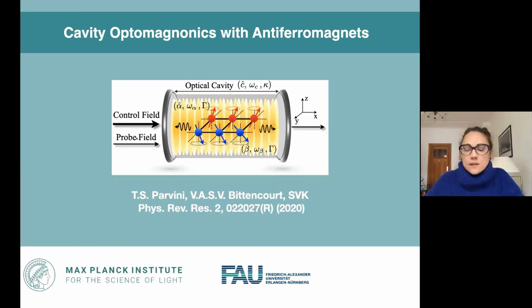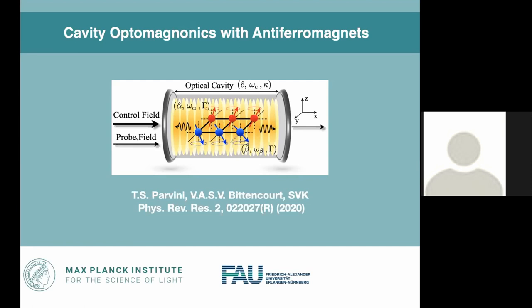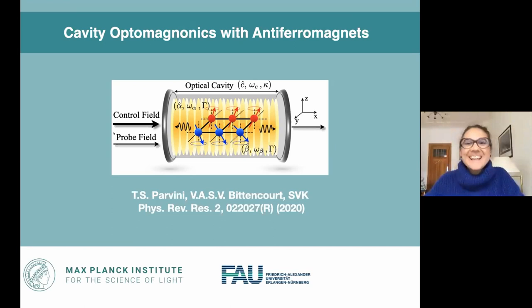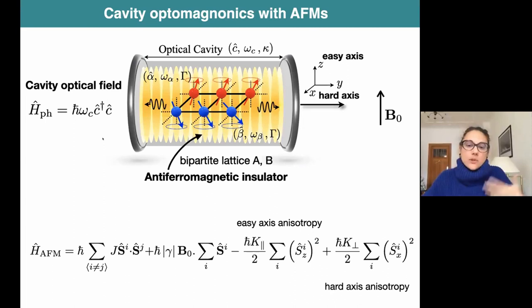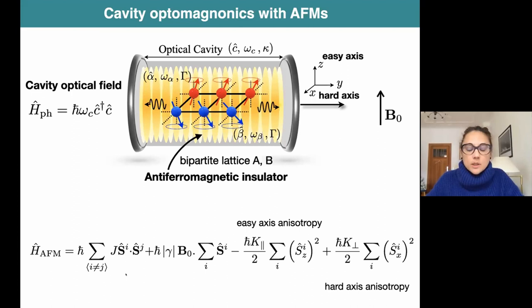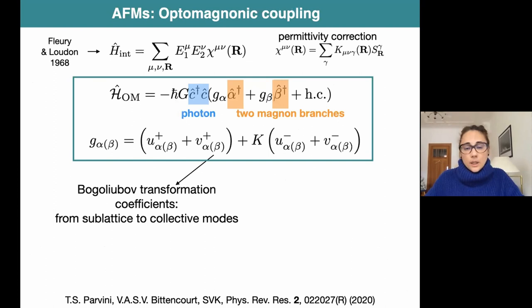In the last few minutes, let me tell you briefly about generalizing these concepts to antiferromagnets. We asked ourselves: what happens if we have an antiferromagnetic insulator? We treat a very simple case of a collinear antiferromagnetic structure with a bipartite lattice, which has two magnon branches, alpha and beta. We have the magnetic Hamiltonian with the usual exchange term and applied magnetic field, and we also allow for easy and hard axis anisotropies. The question is how the magnon modes would couple to a cavity optical field.